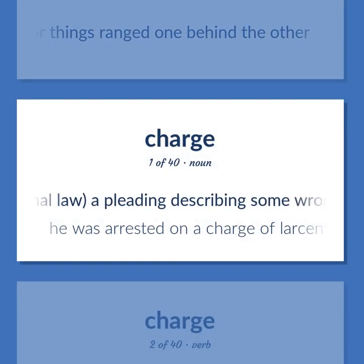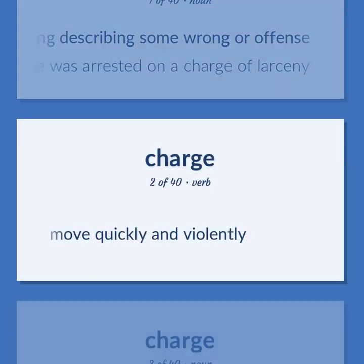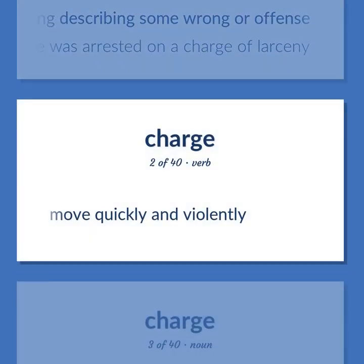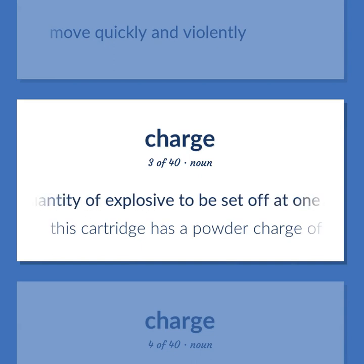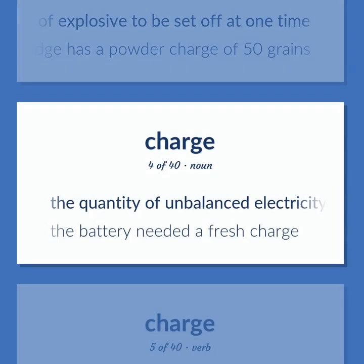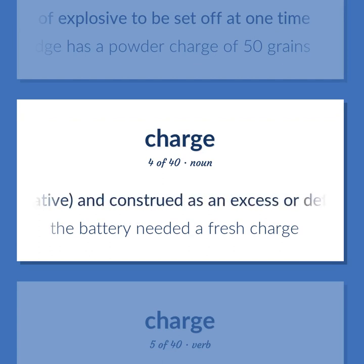Charge: criminal law, a pleading describing some wrong or offense. Example: he was arrested on a charge of larceny. Move quickly and violently. A quantity of explosive to be set off at one time. Example: this cartridge has a powder charge of 50 grains. The quantity of unbalanced electricity in a body, either positive or negative, construed as an excess or deficiency of electrons. Example: the battery needed a fresh charge.